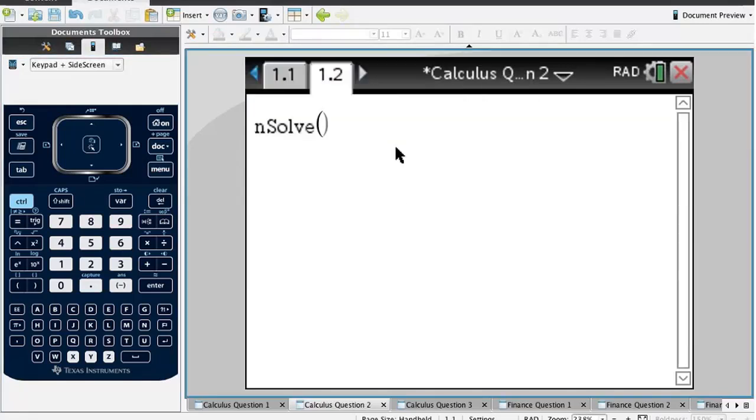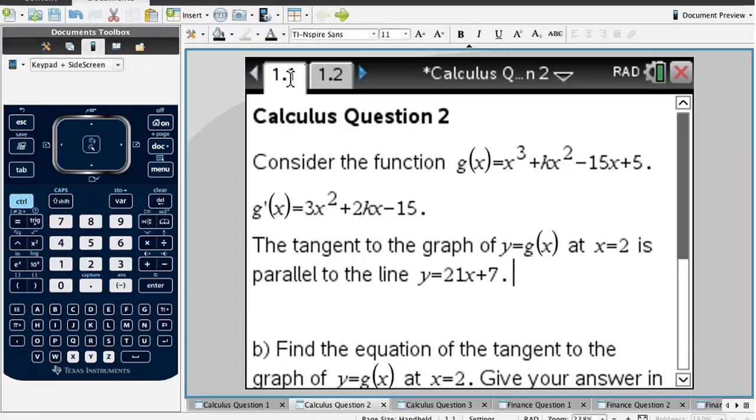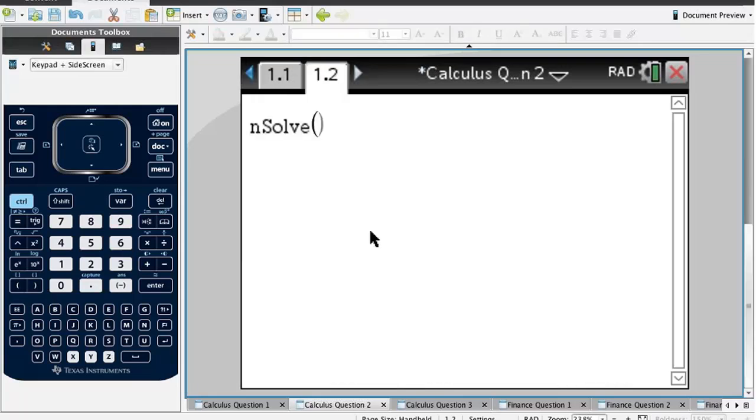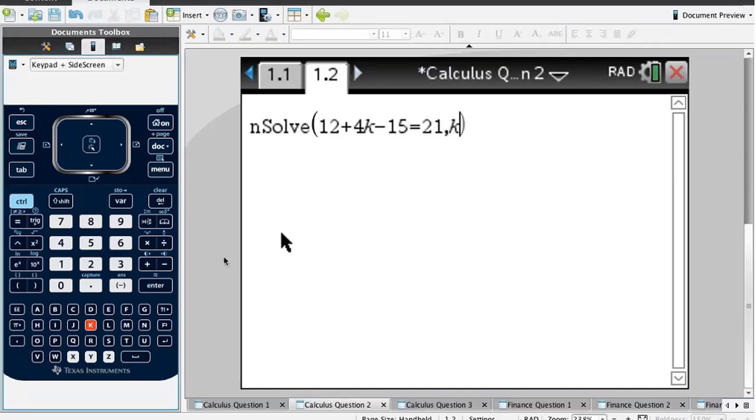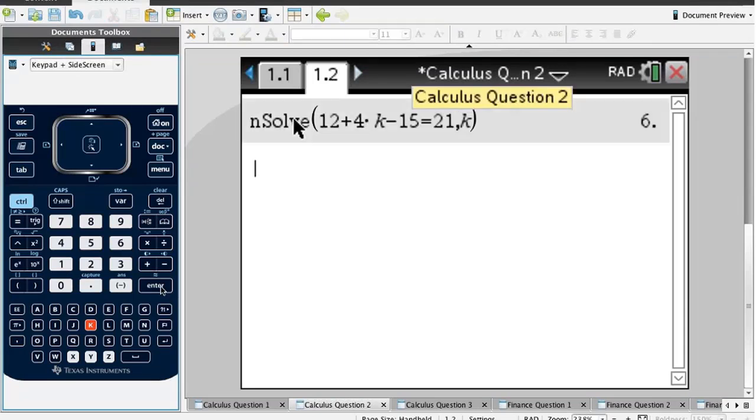If we substitute x equals 2 into there, then solve it for 21. We're going to do a numerical solve. Subbing 2 in there, 2 squared is 4, so we get 12 plus 4k minus 15, and we want that to equal 21. This time I want to solve it for k. Press enter and I get 6. So k is actually 6.